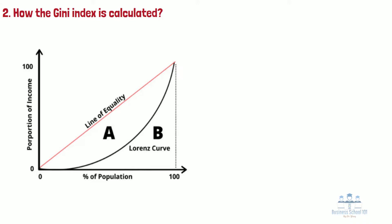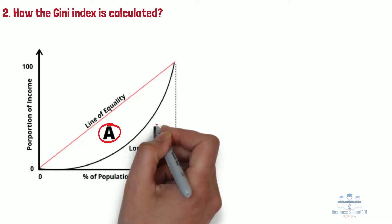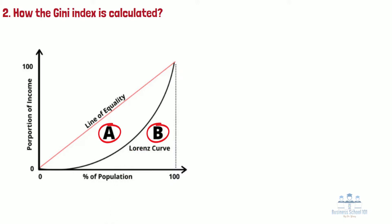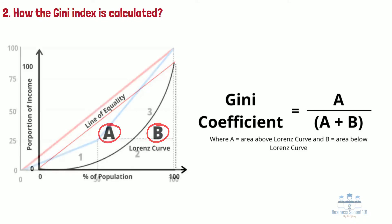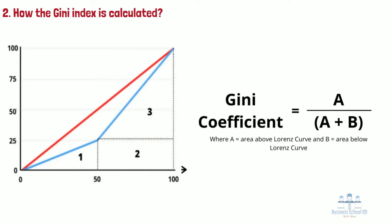The area between the curve and the line of equality is used to calculate the Gini coefficient. The area above the Lorenz curve towards the line of equality is referred to as area A, and the area below the Lorenz curve as area B. The Gini coefficient formula is calculated using area A divided by the sum of area A and B. To calculate the Gini coefficient, we must first measure the area of B by splitting each segment into triangles and squares.